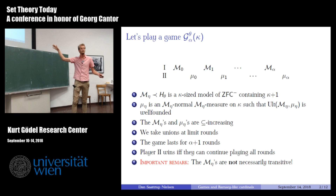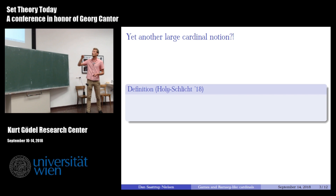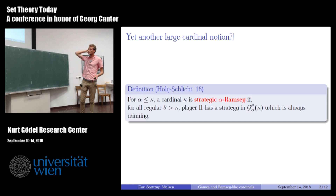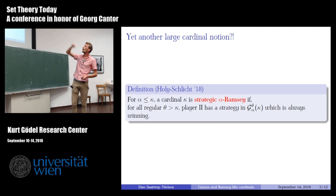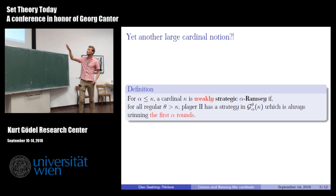An important remark: the models are not required to be transitive — we only require them to contain κ+1 and be elementary in H_θ. This leads us to a large cardinal notion defined by Peter Holy and Philip Schlicht in their 2018 paper. If α ≤ κ, then a cardinal κ is strategic α-Ramsey if for every regular cardinal θ > κ, player two has a winning strategy in this game — no matter which models player one plays, we can always find measures in this increasing fashion.